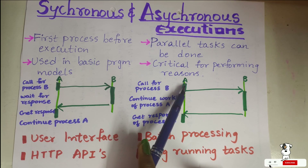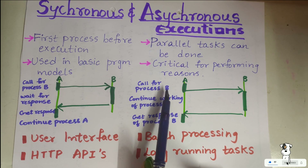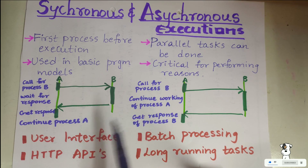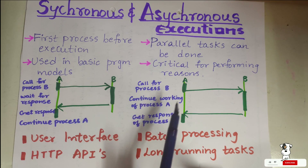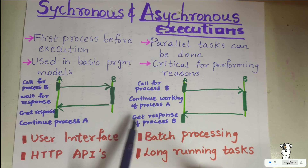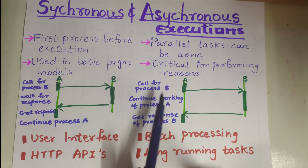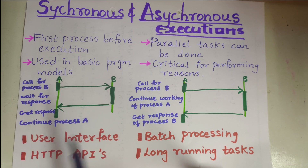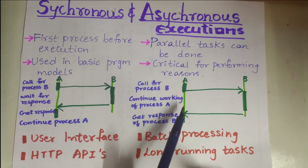But in asynchronous execution, when A wants to call process B, it can continue working on process A simultaneously. It does not need to wait for the response from B, and after receiving the response it can still continue working. Asynchronous allows simultaneous tasks without waiting.